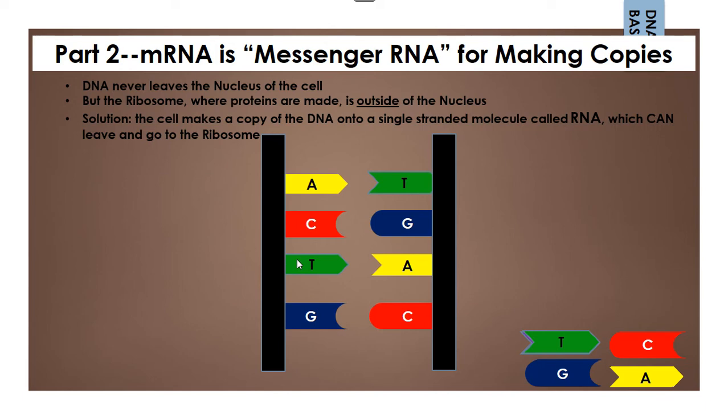And so the solution is that another molecule called RNA, which is only one strand, is used to make a copy of the DNA. And then the single-stranded RNA can leave the nucleus and go to the ribosome.